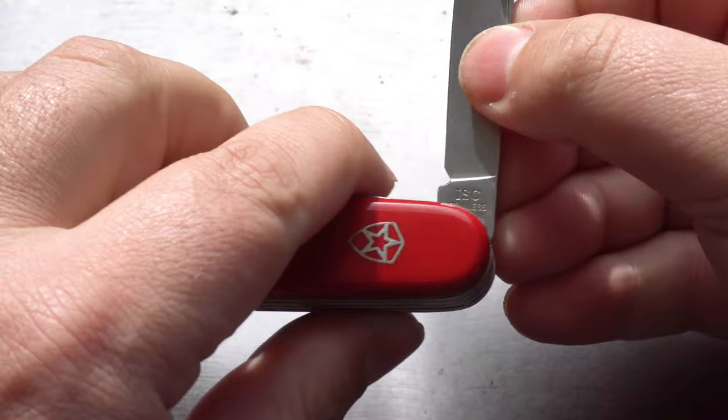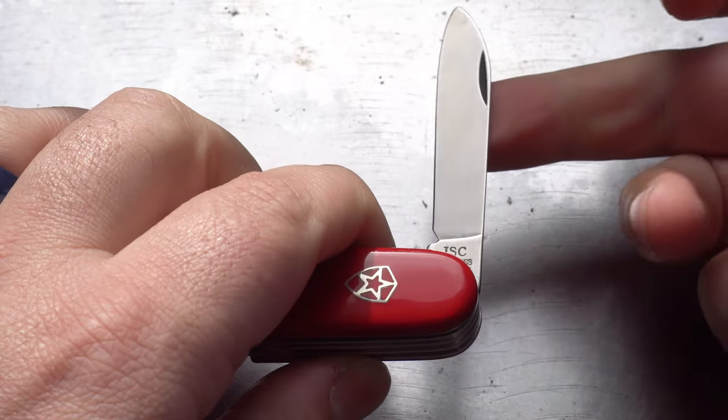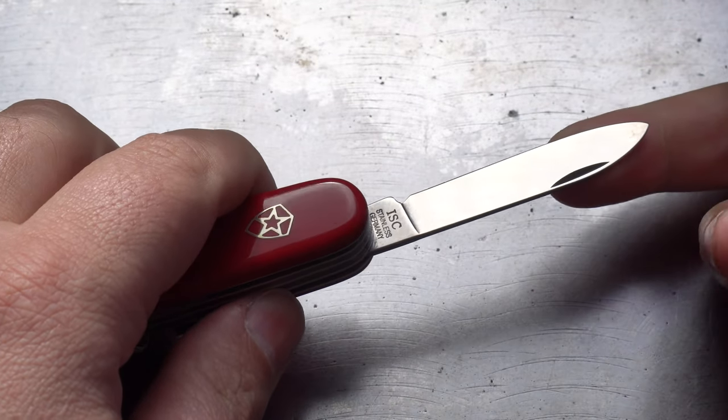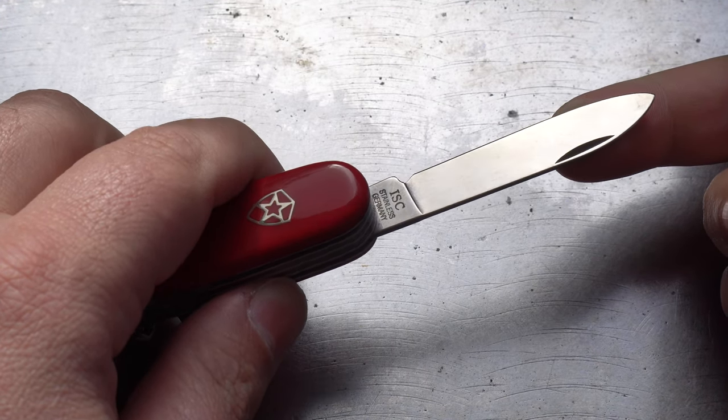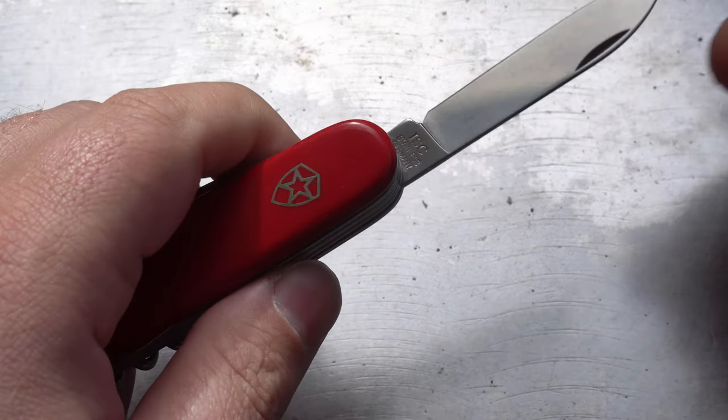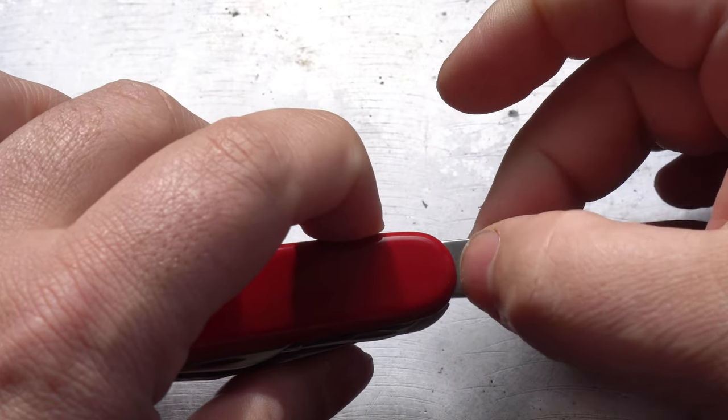And now for something completely different. Just kidding. Exactly the same blade too. Tang stamp's different though. Here we go, ISC Stainless Germany. So ISC obviously stands for Imperial Schrade Corp. Nothing on the reverse.